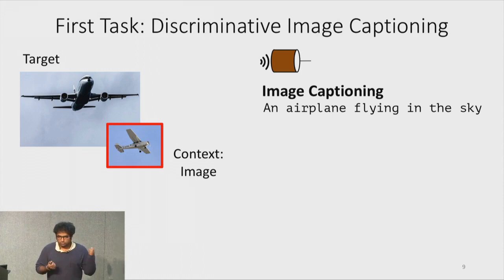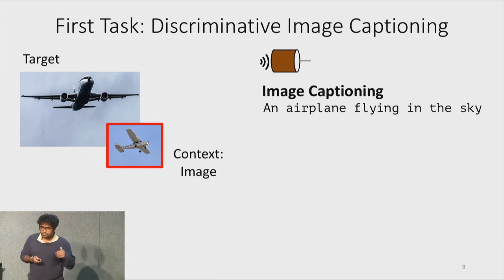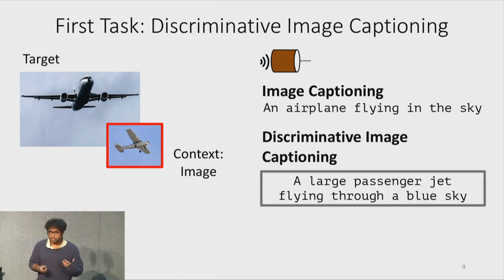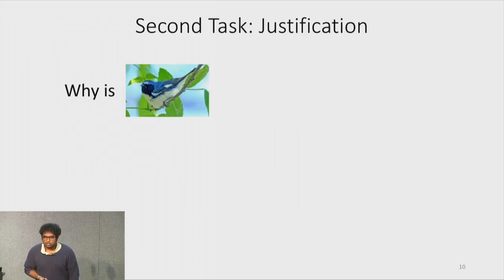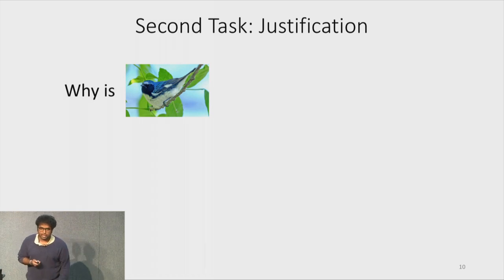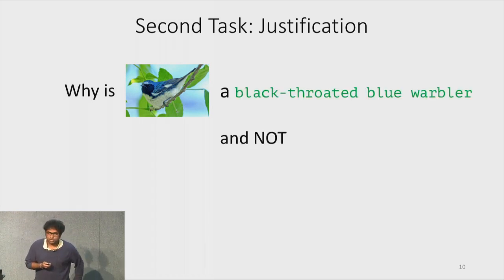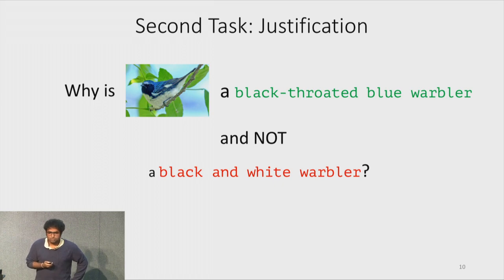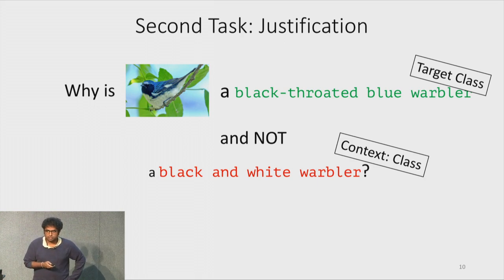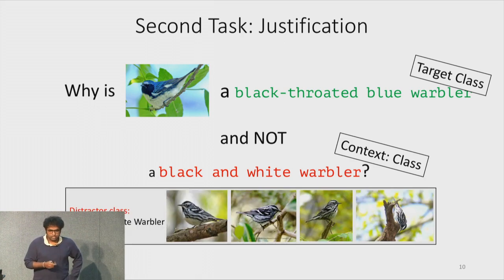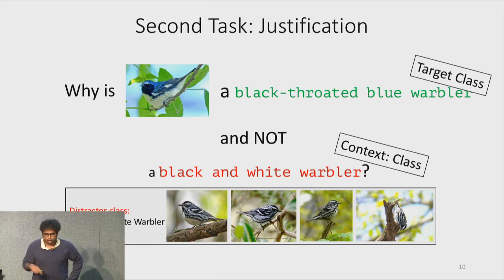More formally, the first task is discriminative image captioning — generating a caption referring to the target image relative to a distracted image. The second task is justification, where we answer why this image is a black-throated blue warbler and not a black-and-white warbler. Images from the distractor class are shown for illustration but are not available to the model during training or inference.